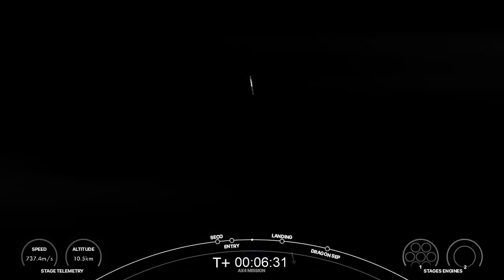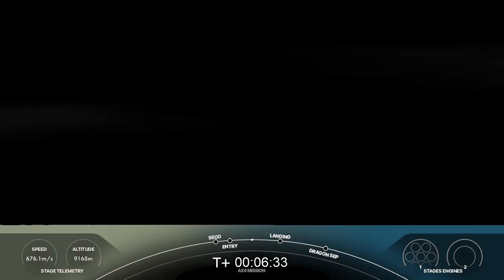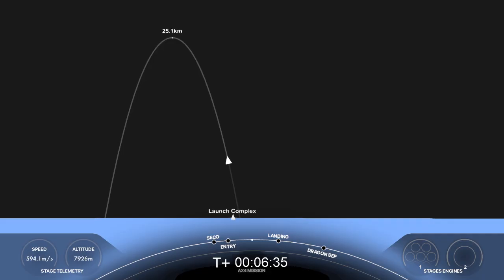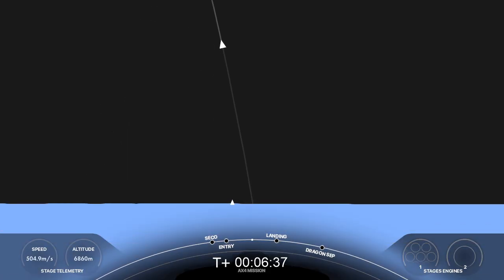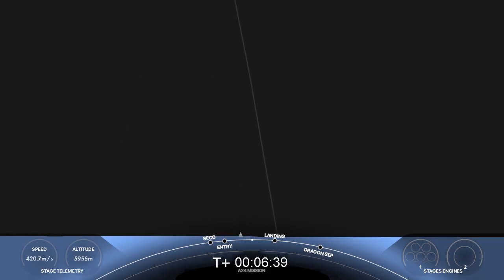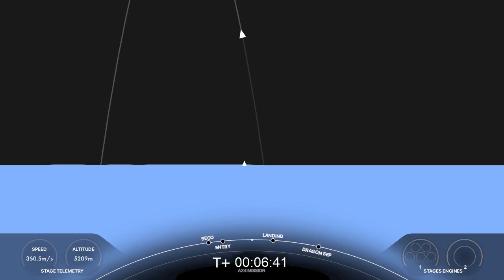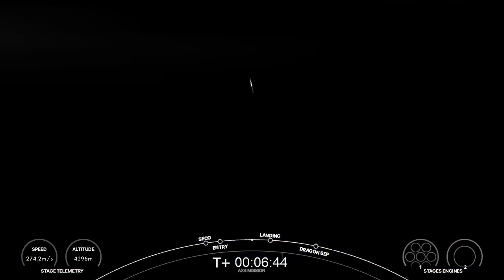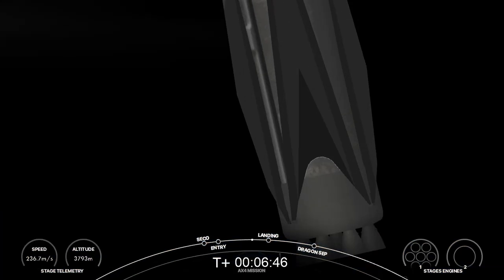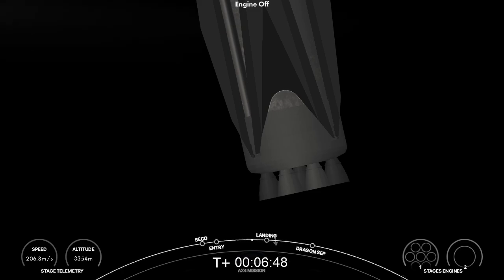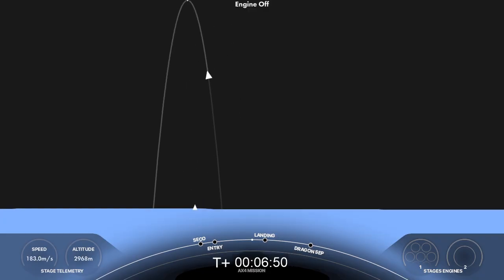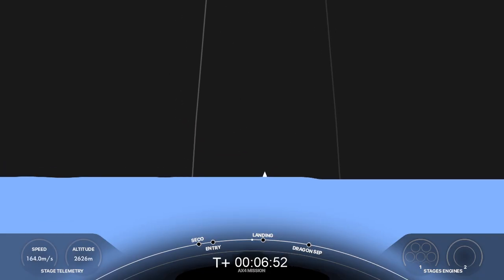Right now on your screen we've got great views of our second stage taking our AX4 crew to orbit. The next milestone for our first stage is going to be the landing burn, where we'll relight just the center engine. Dragon SpaceX, nominal trajectory. Again, things we love to hear. Stage one FTS. Dragon copies, nominal trajectory. Continuing to get good communication from our crew onboard Dragon.